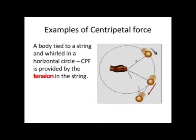Now the examples of centripetal force. In the first example, a body is tied to a string and whirled in a horizontal circle. The necessary centripetal force is provided by the tension acting in the string. If somehow the string is broken, the body goes off tangentially. Because when the string breaks, the tension becomes zero and no centripetal force is provided, so it cannot move on the circular path. Therefore it goes off tangentially. This shows that centripetal force is necessary to perform circular motion.